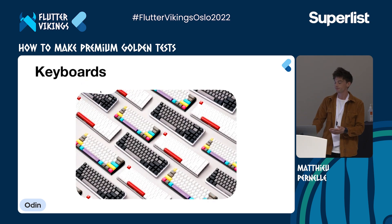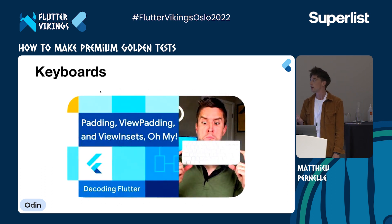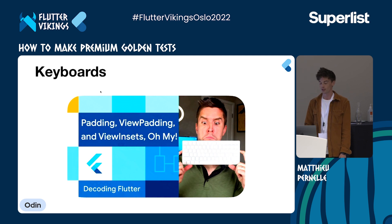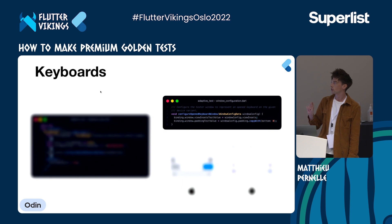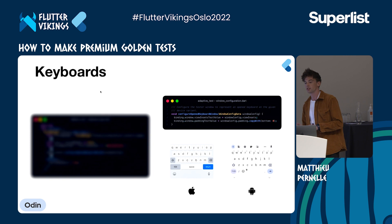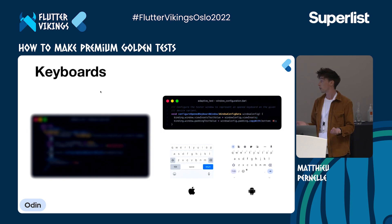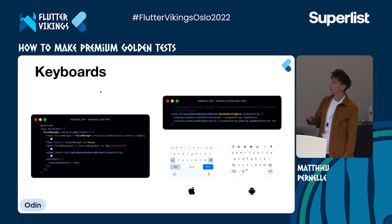Now the tricky part: keyboards. To better understand how Flutter deals with keyboards, I recommend Craig's video on media queries. First, we have to add a new configuration to our test windows with view insets and padding. Then, to render the keyboard in our test, we can use an image of it. And luckily, we know how to render images in tests now. Then, for it to be handled in a test, we can create a keyboard handler.